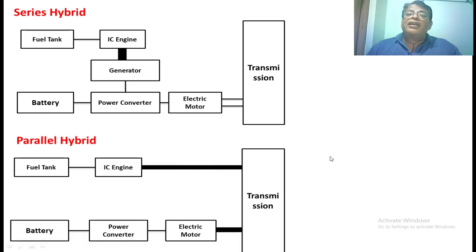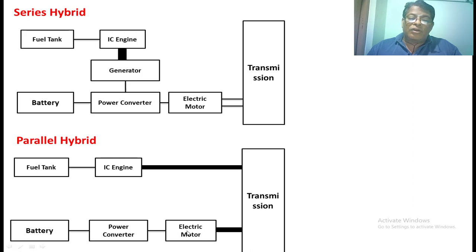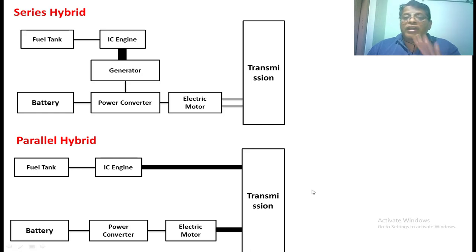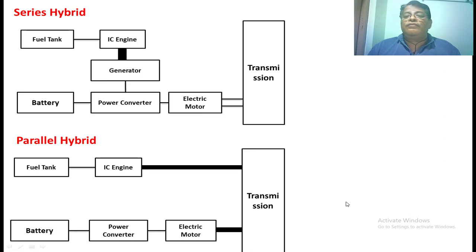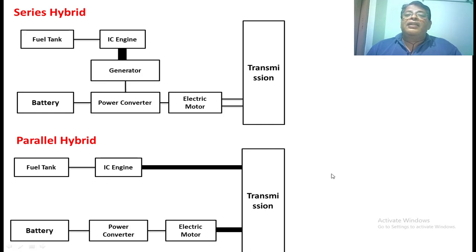In the parallel hybrid vehicle, two sources are connected in parallel to give propulsion power to the vehicle. Here the fuel tank and IC engine are directly connected to the transmission system, which gives propulsion power to the vehicle. Similarly, the battery, power converter, and electric motor are directly connected to the transmission system. Depending on the requirement, the vehicle selects a source to get mechanical power. If going upward, power is taken from the IC engine; on a normal road, power is taken from the battery; going uphill at high demand, power is taken from both IC engine and battery in parallel. This configuration is the parallel hybrid vehicle.